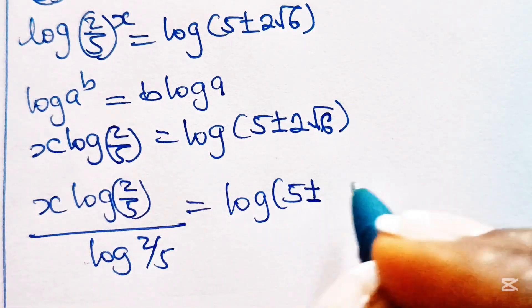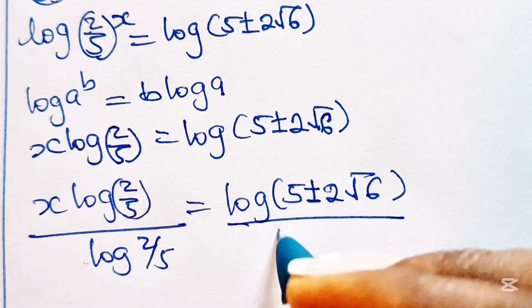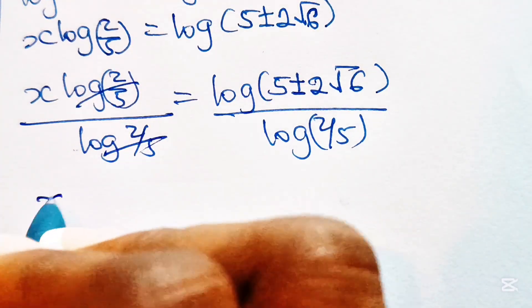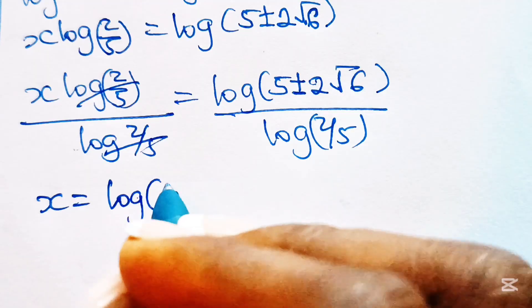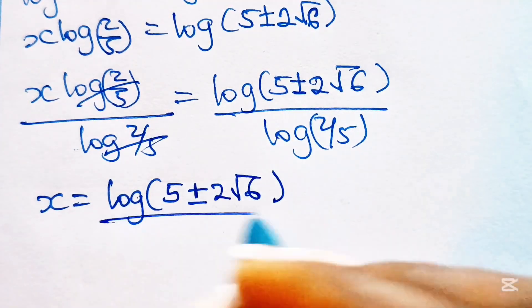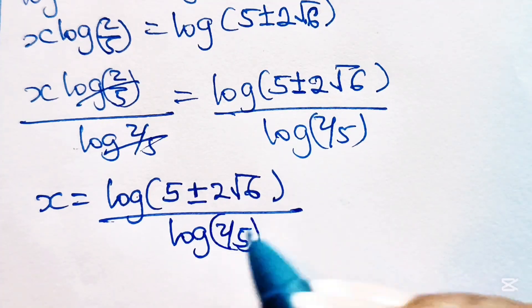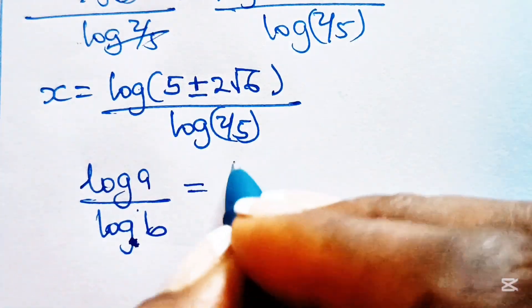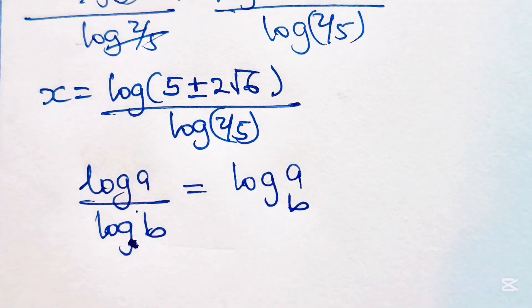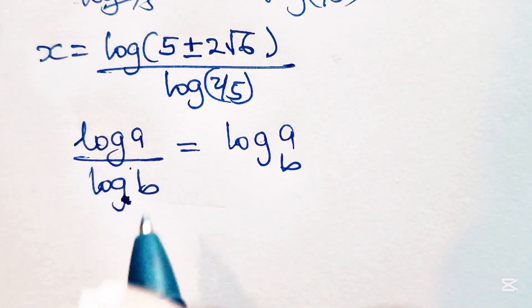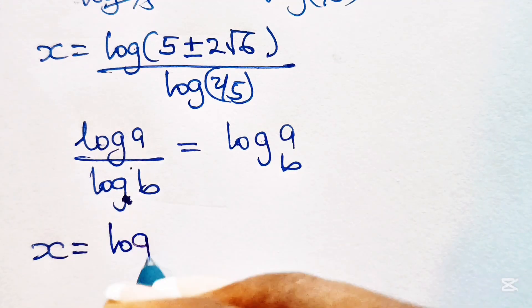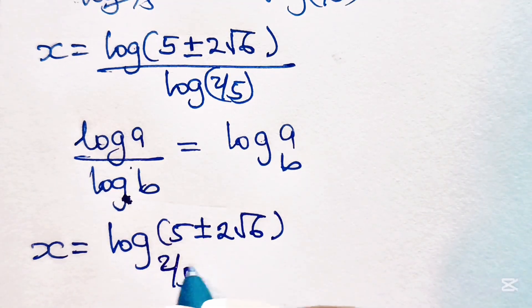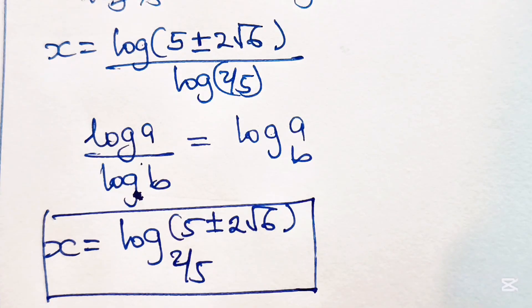Log 2 over 5 cancels on the left, so we have x equals log of 5 plus or minus 2 root 6, divided by log 2 over 5. Note that when you have log a divided by log b, this is equal to log a base b. Therefore we can rewrite x as x equals log of (5 plus or minus 2 root 6) base 2 over 5. So this becomes the value of our x. Thank you so much for watching, bye.